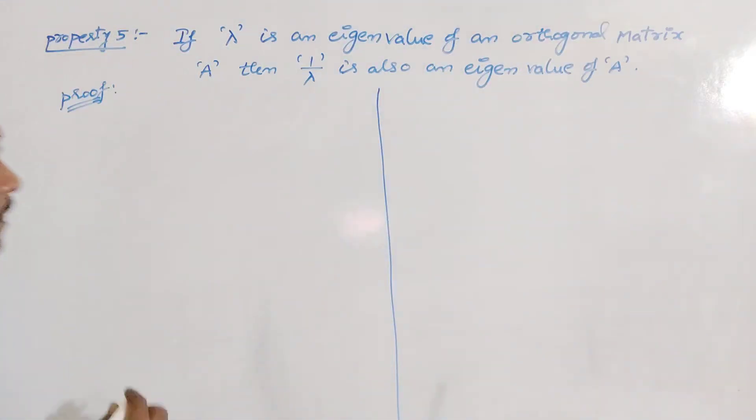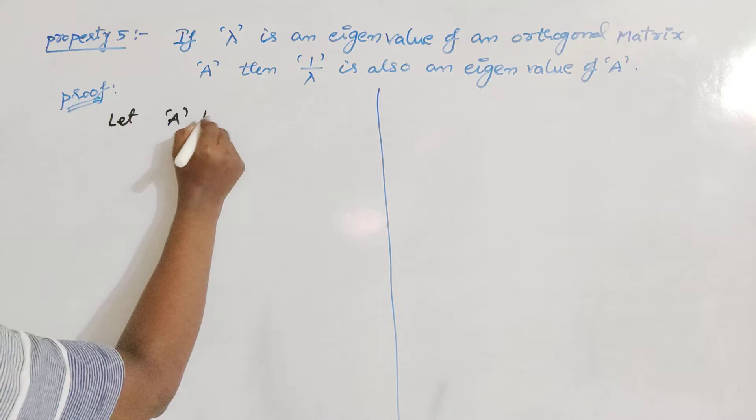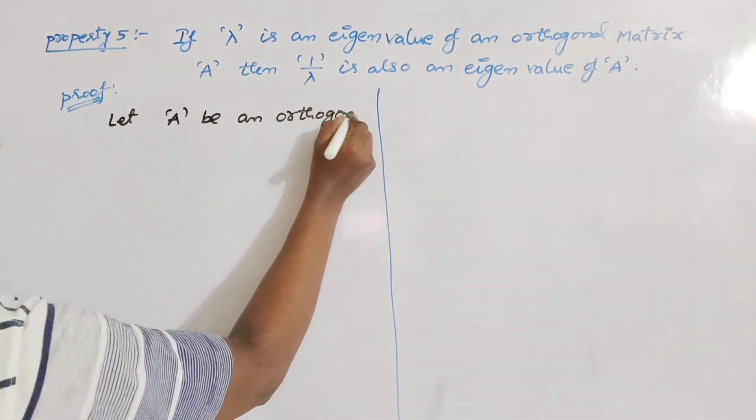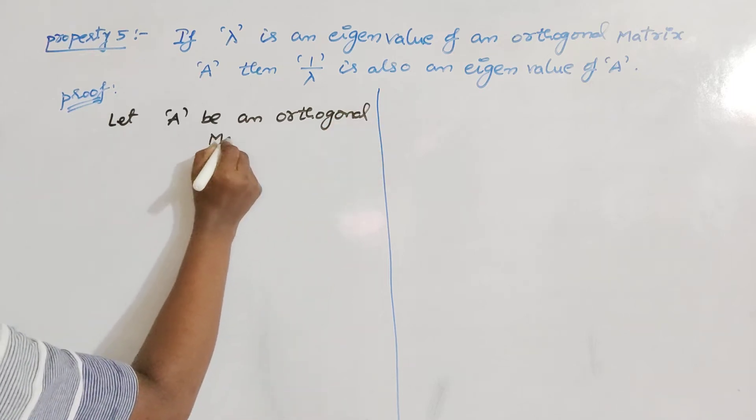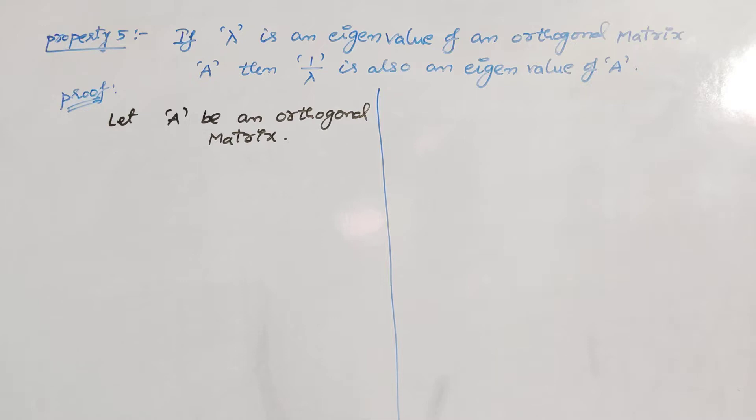See the proof. Let capital A be an orthogonal matrix. What is the meaning of orthogonal matrix?